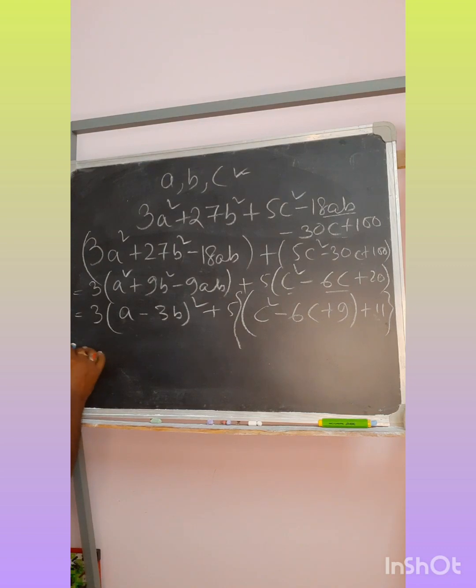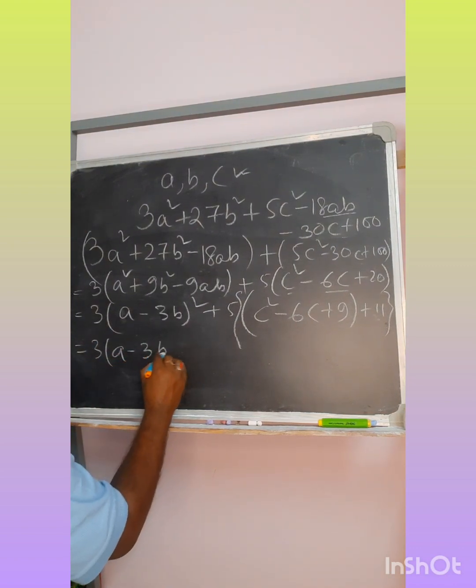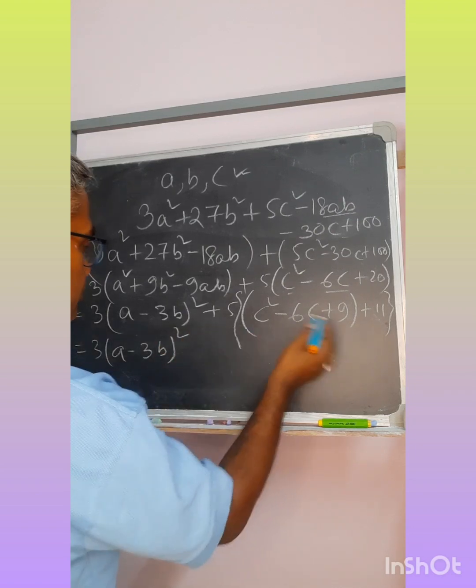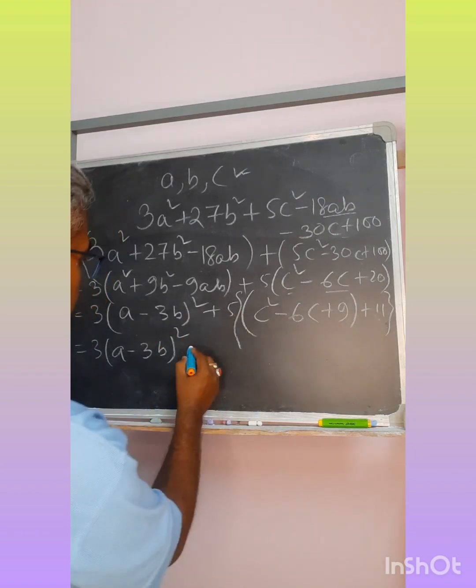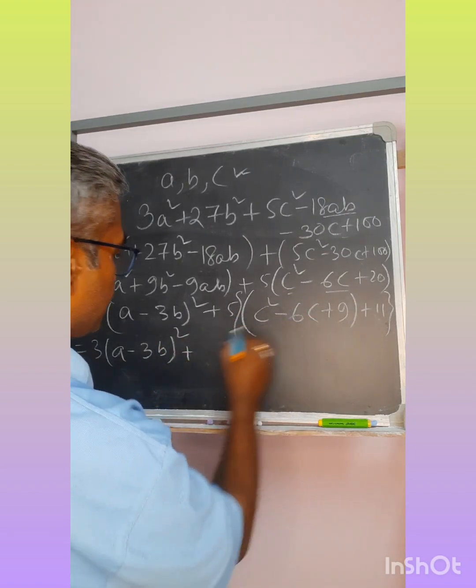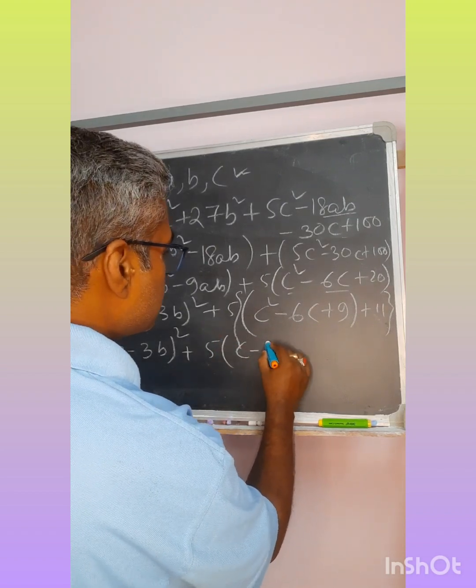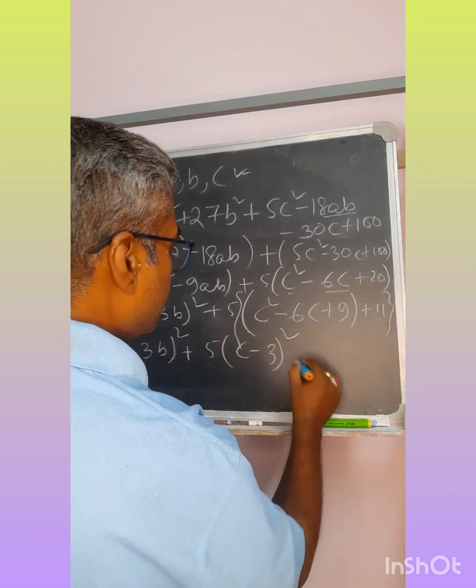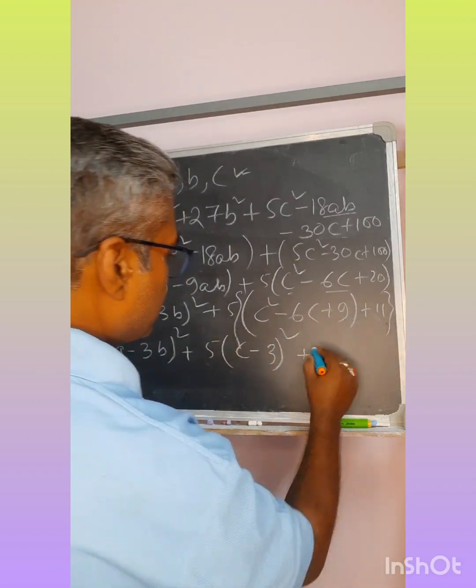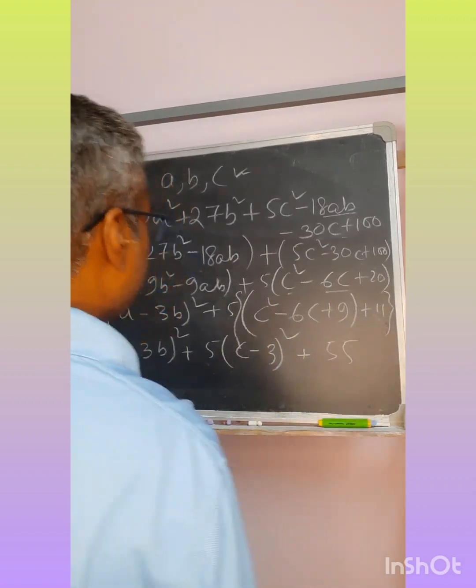I am breaking this equation further by removing the appropriate terms from the bracket. This will give you 5 × (C - 3)² and 5 multiplied by the constant remains 55 there.